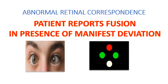The next possibility is abnormal retinal correspondence. In abnormal retinal correspondence, the patient will report fusion on the Worth Four Dot test even in the presence of manifest deviation. We clearly see a movement on the cover test, but in spite of the manifest deviation, the patient will report fusion.